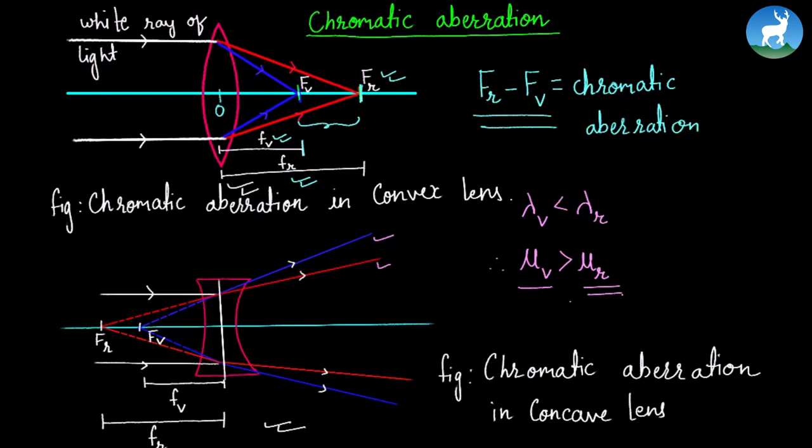With the lens, red color focuses farther. This difference between Fv and Fr is chromatic aberration.